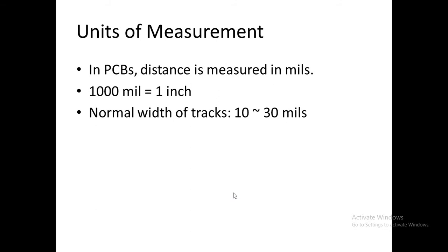Now, units of measurement. In PCBs, distance is normally measured in mils. The distance can also be measured in other units, for example millimeters or centimeters, but the standard unit of measurement is mils. 1000 mils is equivalent to 1 inch. The normal width of tracks or copper traces on a PCB ranges from 10 to 30 mils. It may be less than 10 mils or greater than 30 mils, but normally it ranges from 10 to 30 mils. We will discuss the width of the tracks and the effect of increasing or decreasing the width in a later slide.